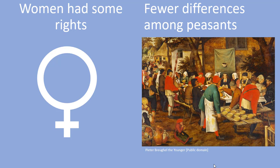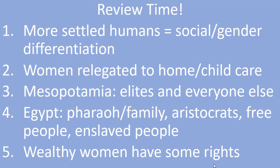To review social structure in Mesopotamia and Egypt: once humans became more settled, social classes and gender divisions emerged. Because settled women could have more children, they became increasingly relegated to having and raising children while men took over farming and political work. In Mesopotamia, the social structure consisted of the elites, those who worked directly for them, and then everyone else including enslaved people. In Egypt, the social structure involved the pharaoh and family at the top, rich aristocrats at the next level, every free person after that, and finally enslaved people at the bottom. In Egypt, wealthy women did have some freedoms that non-wealthy women did not have, but it was still a largely patriarchal society.